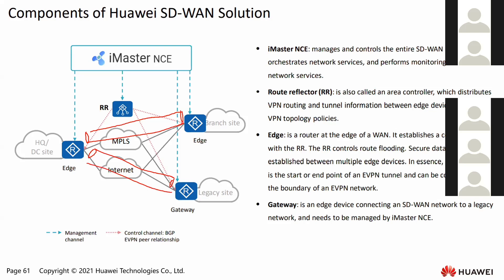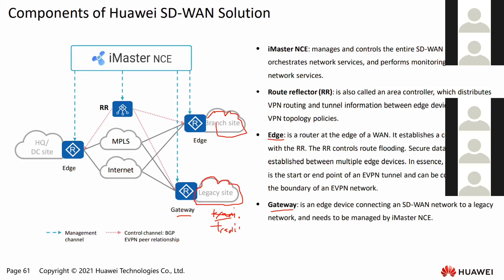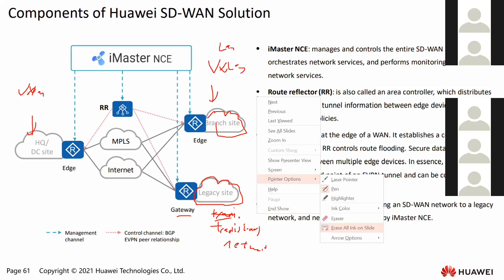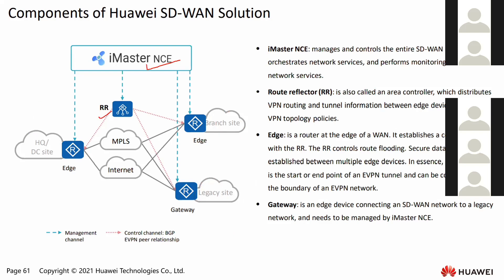The router connects to all internal networks such as the HQ, and we have a router connecting to a LAN network on the branch side. We also have the Gateway, which is similar to H except that behind it we will have a legacy network using traditional networking. For H devices, we use a VXLAN network as the LAN network. So the key components are: iMasterNCE, Route Reflector, H, and Gateway.